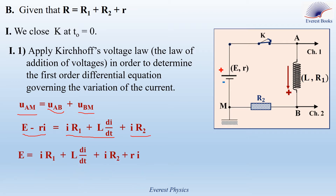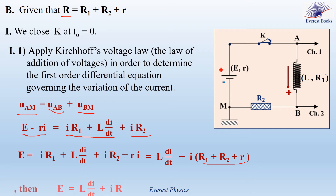Rearranging, we get this equation. Taking I as a common factor, we get another equation. Since R1 plus R2 plus small r equals capital R, we replace R1 plus R2 plus r by capital R to get the differential equation governing the variation of the current during its growth.